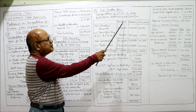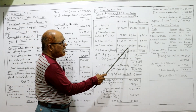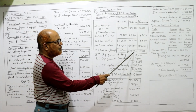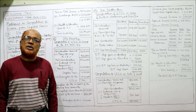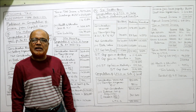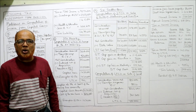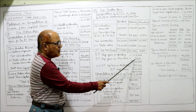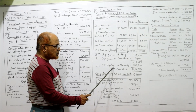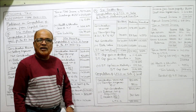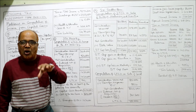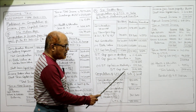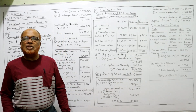Short-term capital gain on building: 34 lakh 30 thousand minus 23 lakh 15 thousand = 11 lakh 15 thousand. For machinery: 10 lakh 2 thousand 800 minus 11 lakh 5 thousand — a negative figure — that is a short-term capital loss of 1 lakh 2 thousand 200. For furniture: 25 thousand 500 minus 22 thousand = 3 thousand 500 — a positive short-term capital gain. So we have gains on building and furniture and a loss on machinery. Total short-term capital gain: 11 lakh 15 thousand + 3 thousand 500 = 11 lakh 18 thousand 500. Less short-term capital loss on machinery: 1 lakh 2 thousand 200. Net short-term capital gain = 10 lakh 16 thousand 300.